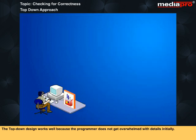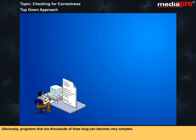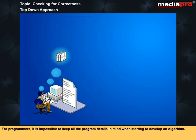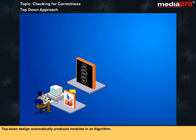The top-down design works well because the programmer does not get overwhelmed with details initially. Obviously, programs that are thousands of lines long can become very complex. For programmers, it is impossible to keep all the program details in mind when starting to develop an algorithm. Top-down design automatically produces modules in an algorithm. A module is a group of instructions that performs a specific function.